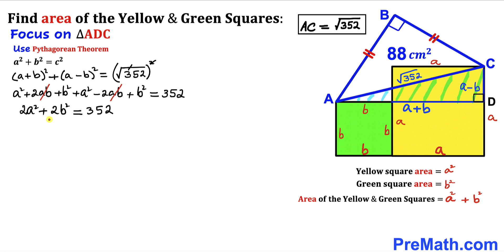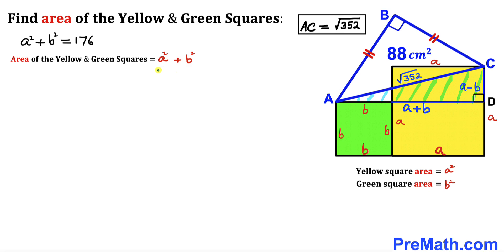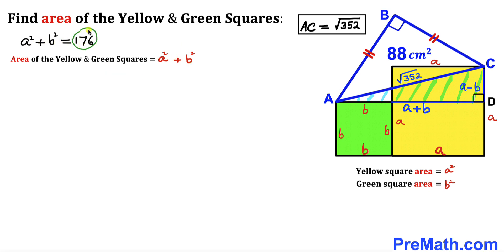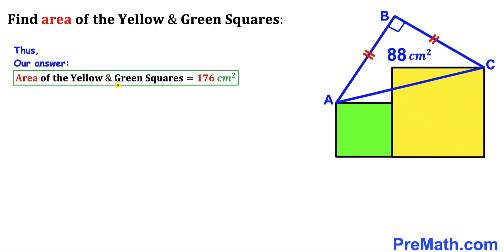Dividing both sides by 2 gives a² + b² = 176. Since the combined area of the yellow and green squares is a² + b², the answer is 176 cm². Thanks for watching, and please don't forget to subscribe to the channel for more videos.